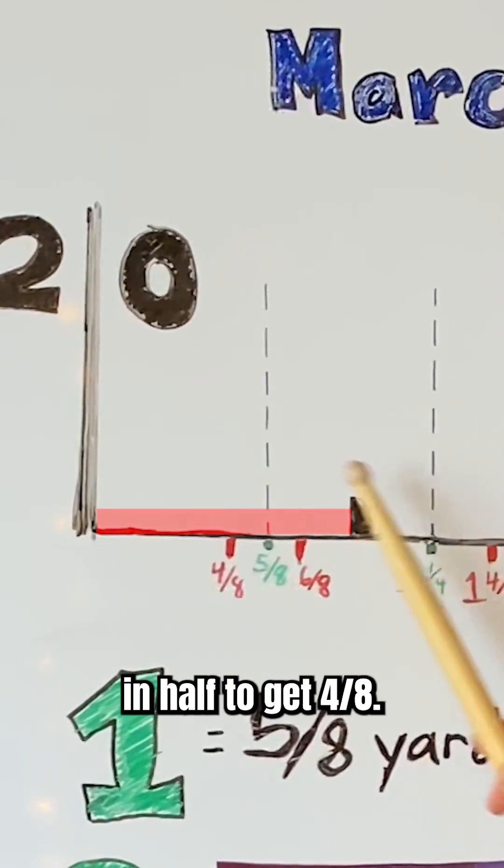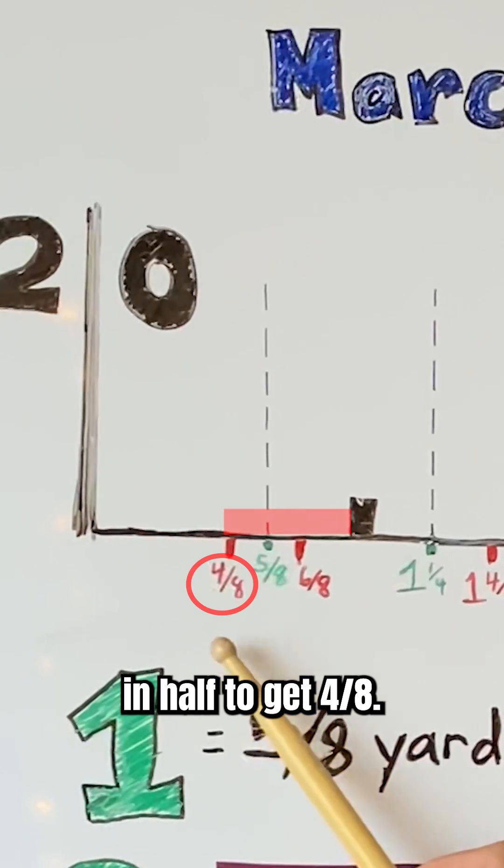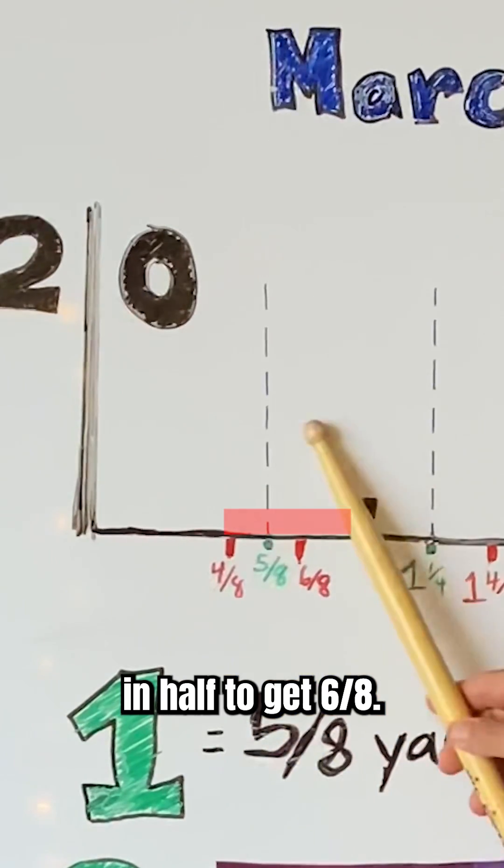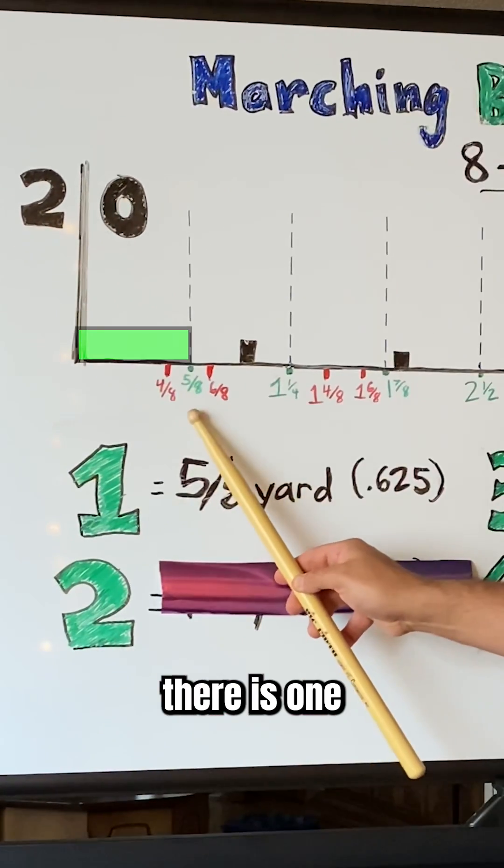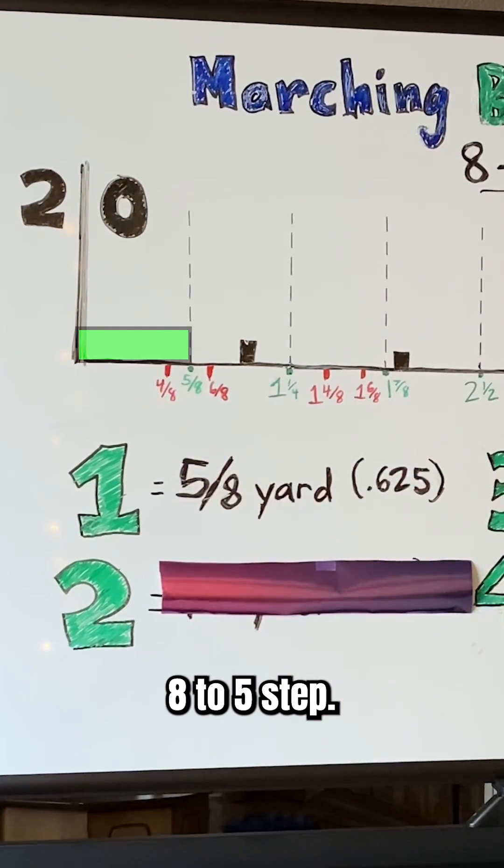We're going to divide the first yard in half to get 4/8. Then we're going to divide that in half to get 6/8, and then we split that to find 5/8 of a yard. That right there is 1 eight-to-five step.